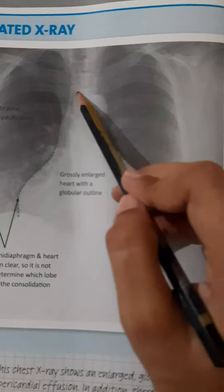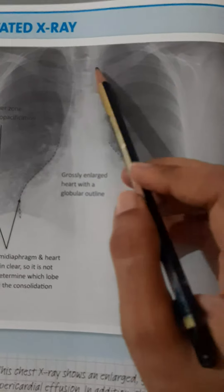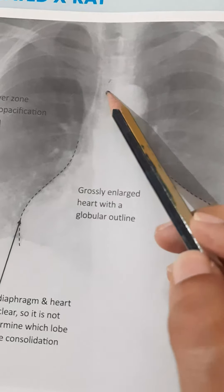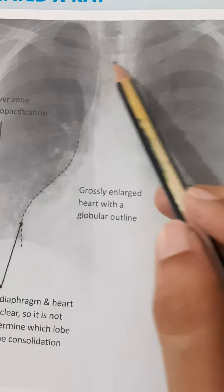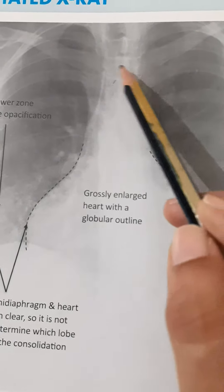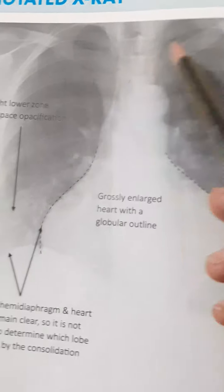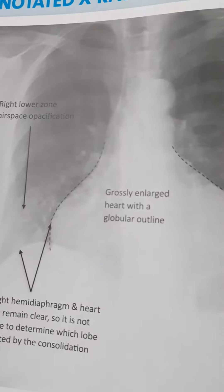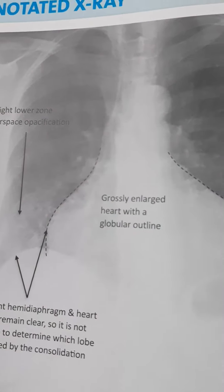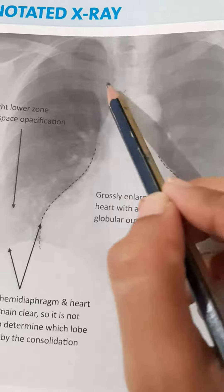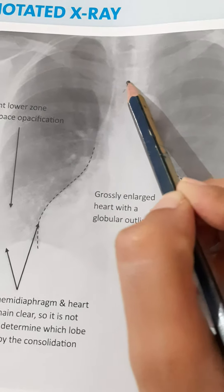Here we can see the trachea is somewhat shifted towards the right side, and the medial ends of the clavicles are not equally distant from the vertebral spinous processes, which indicates that the patient is slightly rotated.